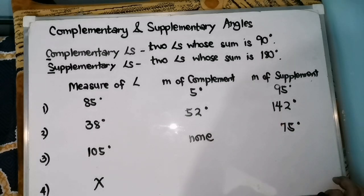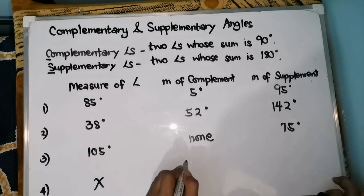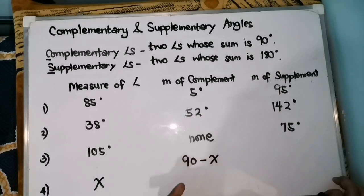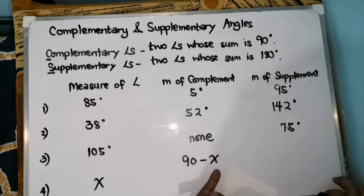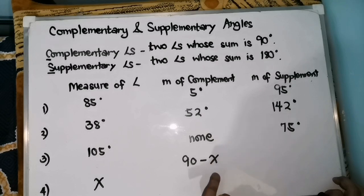For our last given, we have variable x. Therefore, its complement is 90 minus x. This x is any variable, or any value that we can substitute into the given variable x.